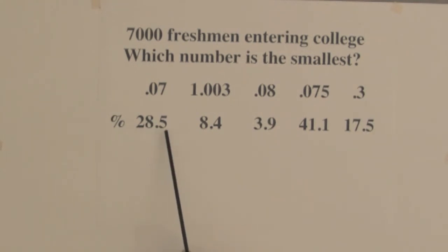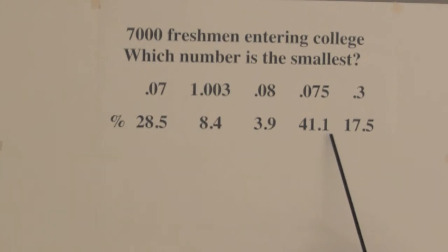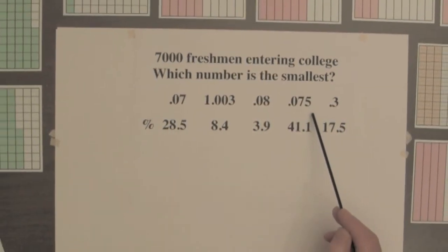Twenty-eight point five percent selected the correct answer. Seventy-five thousandths was selected by forty-one point one percent. And some students may have been influenced by the misconception that the more digits in a decimal, the smaller the decimal. Did you find the research surprising?